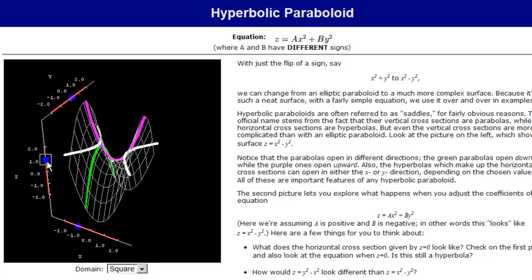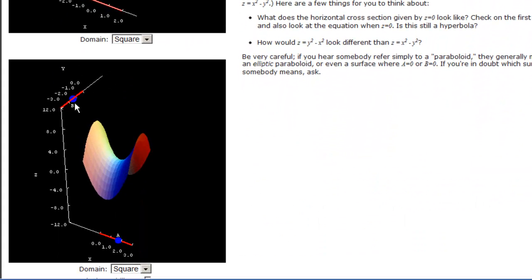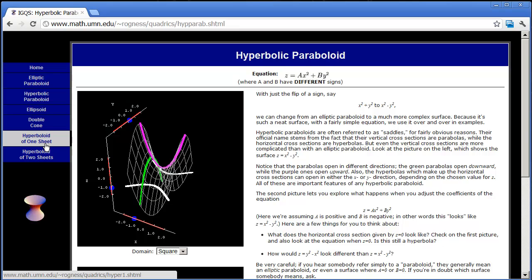And if we hold Y and X constant and vary Z, we have a hyperbola. There it is. Very nice. And we can do the same thing with changing the constants A and B. And you can see how that changes the shape of the graph. And you can do that for all the other ones, too.